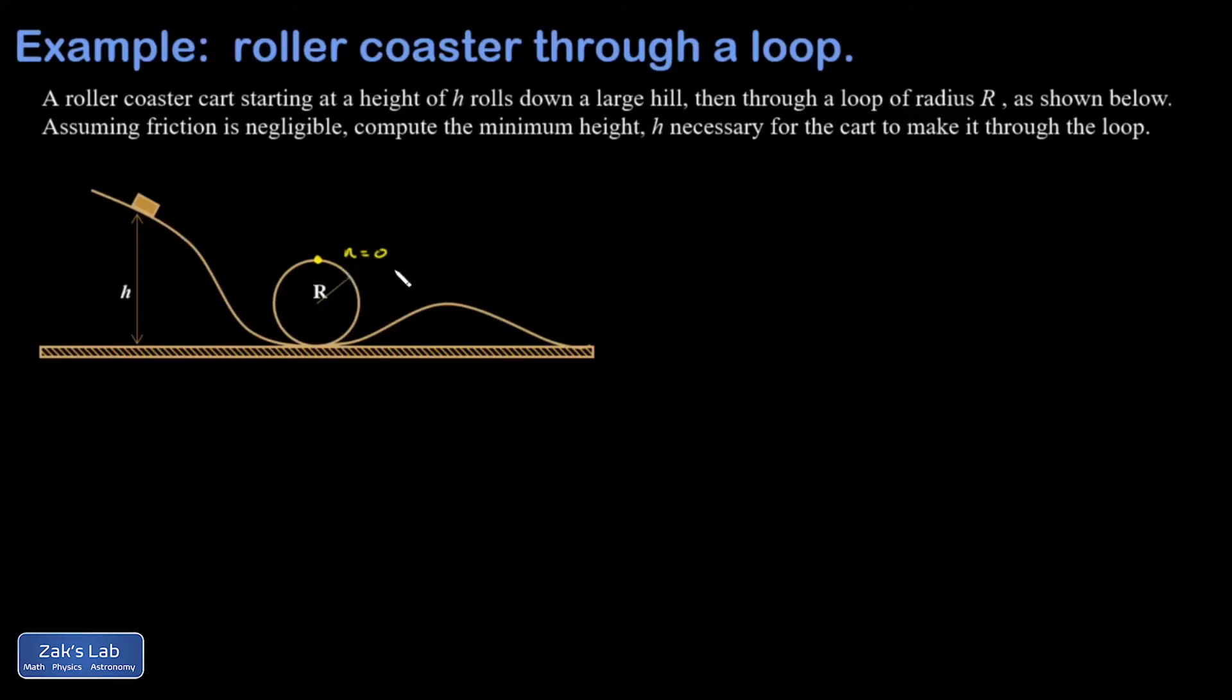So at my minimum velocity, the normal force is zero there. And I'm trying to figure out how high does it have to start to just purely under the force of gravity end up going at the right speed to barely make it through the loop. Any height greater than that, and it will easily make it through the loop. So we're going to split this up into a couple chunks, and I'm going to look at the minimum speed issue.